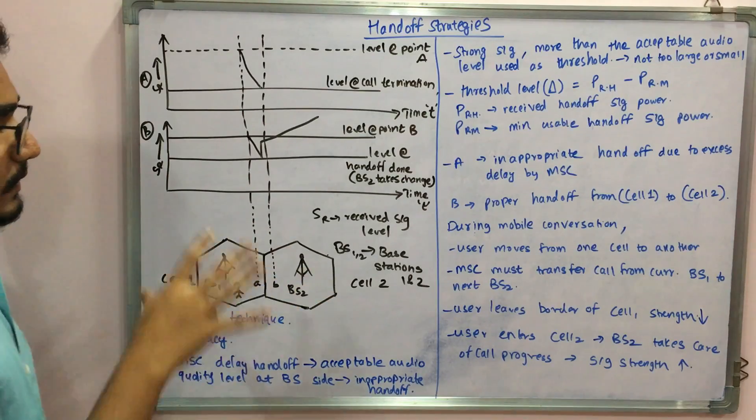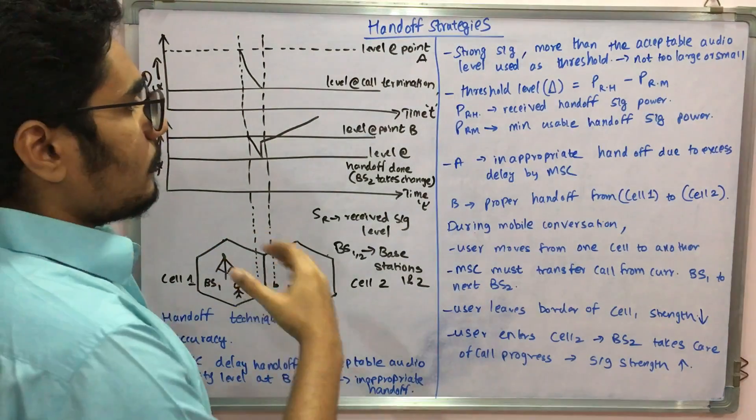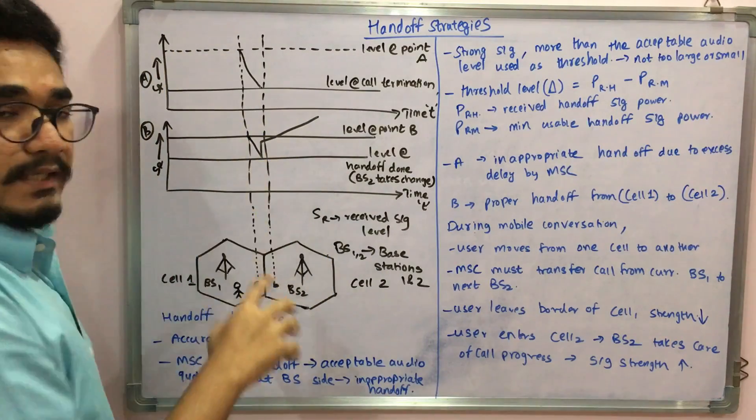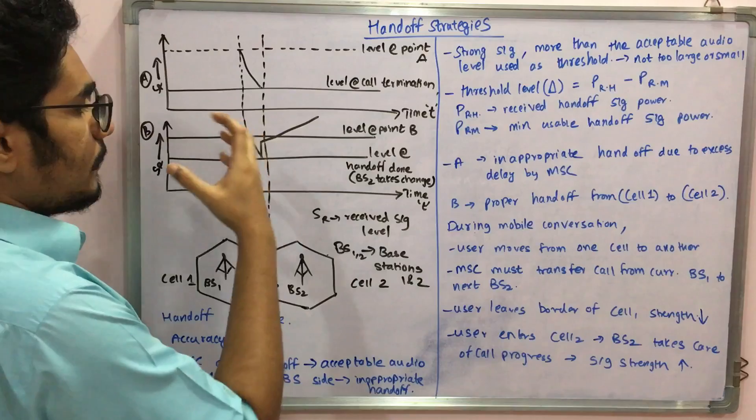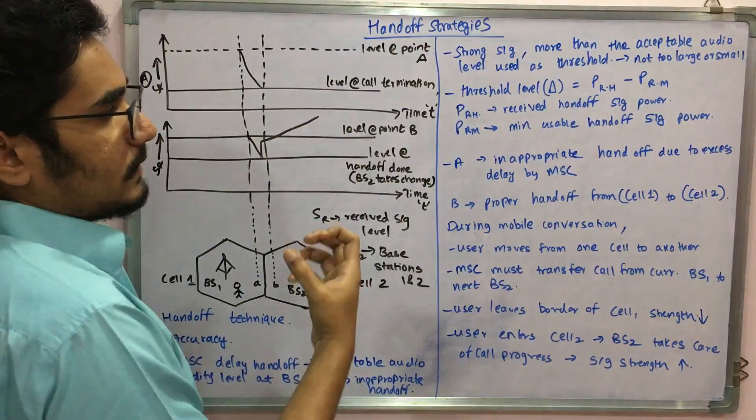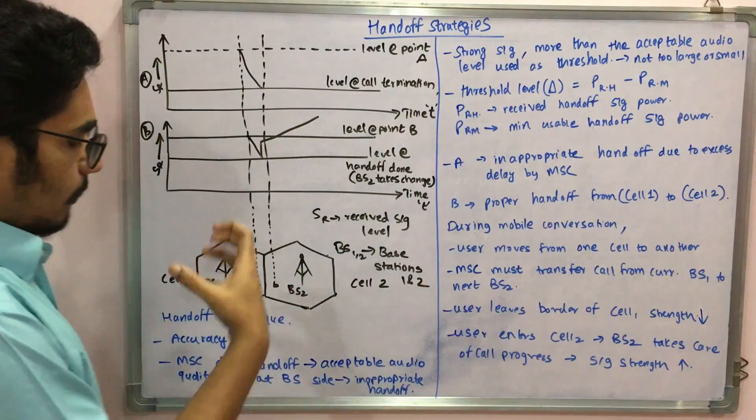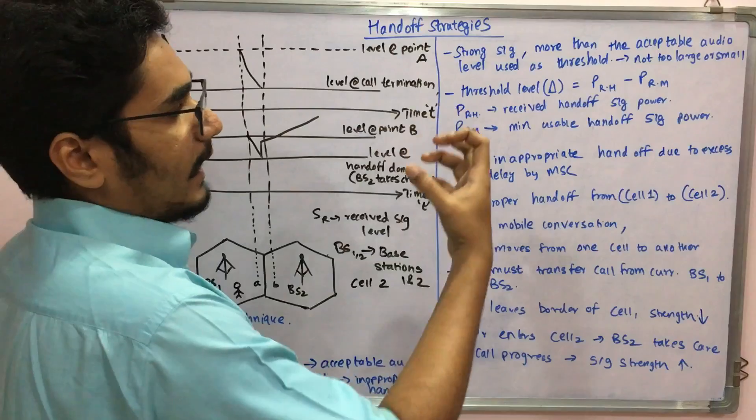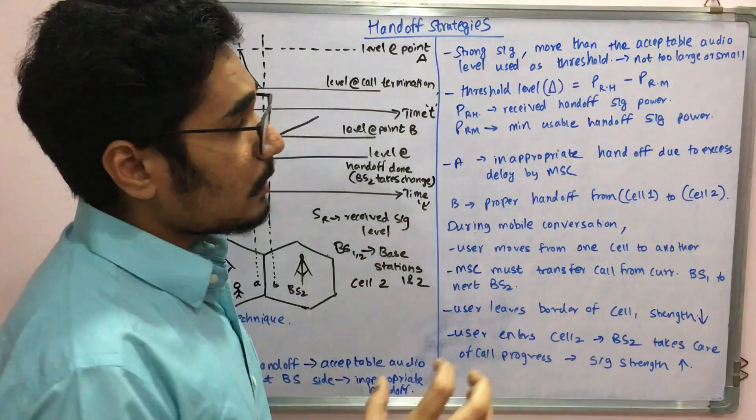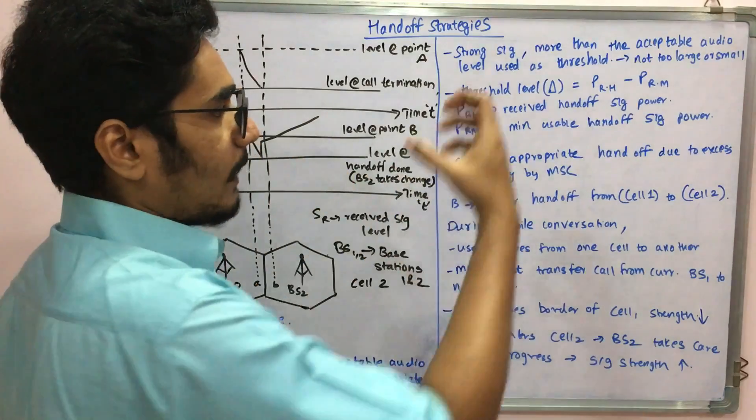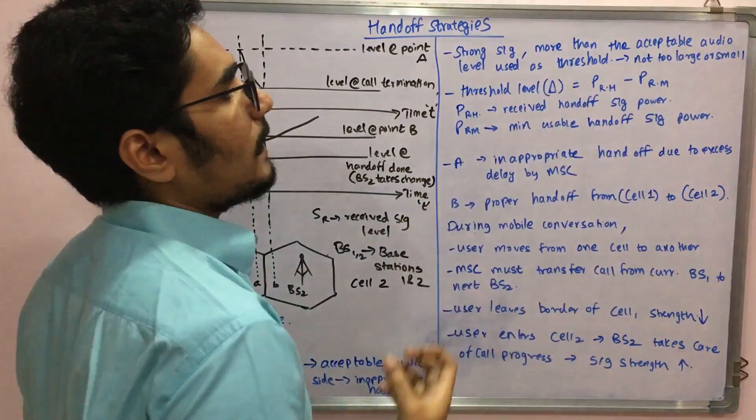In this you need to have a certain limit. When this signal drops down to optimum level, you need to boost it up. Any signal, a strong signal which is more than the acceptable audio level you can hear, is termed as a threshold. That threshold should not be too large nor should it be too small. The threshold level is given by PRH minus PRM.